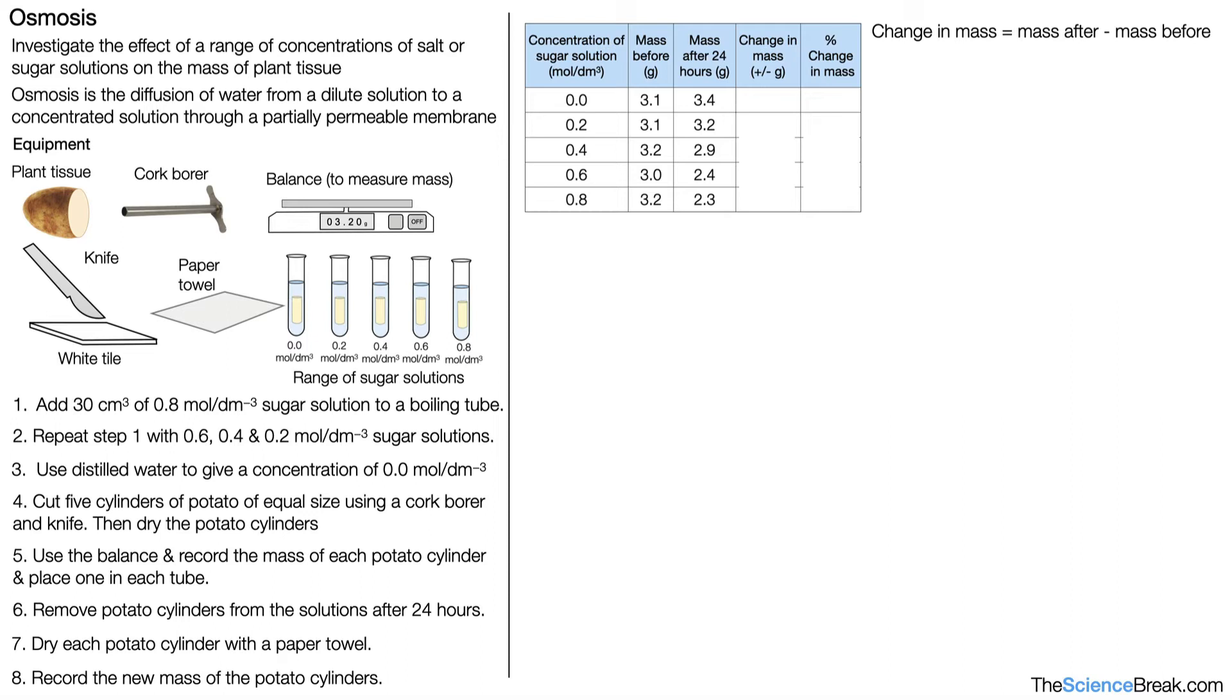To calculate the change in mass, that's a simple case of mass after 24 hours minus mass before. For our first example of 0.0 mol/dm³, it's 3.4 minus 3.1 equals 0.3 grams. We can put that in our table.